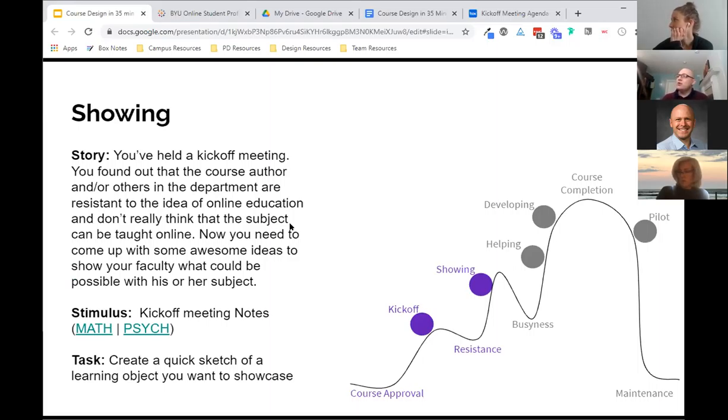So again, I'm going to have you go into a breakout room. Let's do four minutes again. And Jason, if you'll just kind of vary which room you put me in so I can get a chance to see all the different groups. That would be fantastic. And you'll go with that same track that you were in before either math or psych. And you're just going to create some kind of a quick sketch of a learning object you want to showcase.